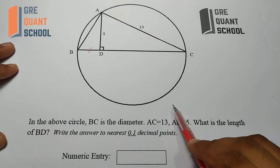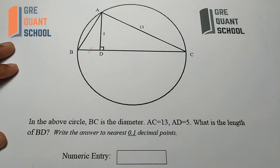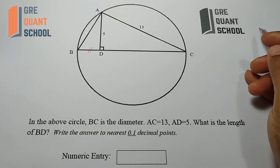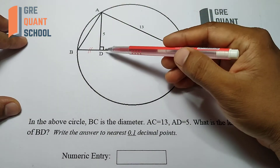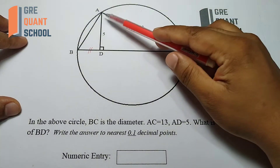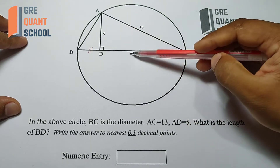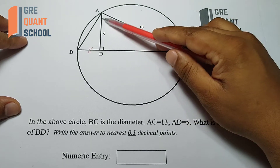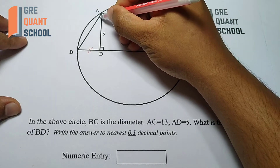This is a numeric entry question — a specific numeric answer is required. In this case, the angle in a semicircle is 90 degrees.